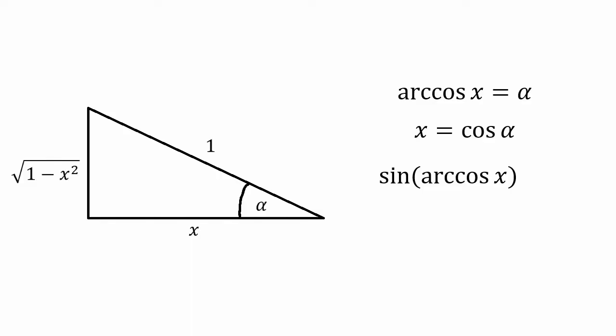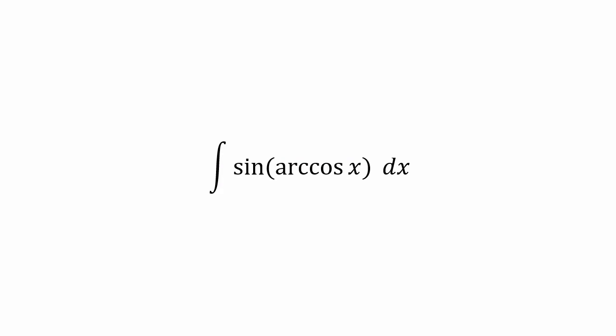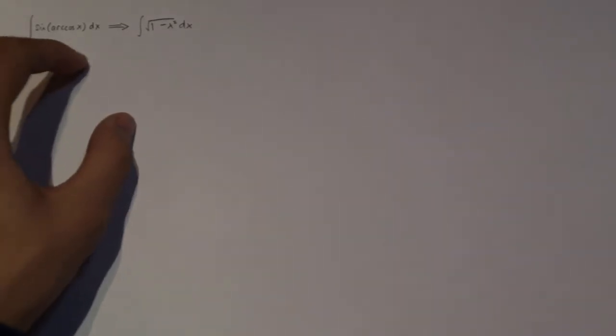Sine of arccos of x is just sine of alpha, and that just equals to the square root of 1 minus x squared. And so now we've reduced our integral from this mess to the integral of the square root of 1 minus x squared with respect to x.